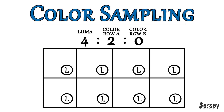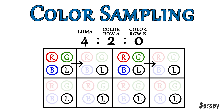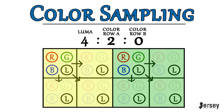In a 4:2:0 image, again, all 4 luminance channels are sampled. Then the color in row A is the same as a 4:2:2 image, where every other pixel is sampled. But then in row B, none of the pixels are sampled. So row B will now get copies of the row above it, kind of making one large pixel over the two pixels in both rows, creating much less information for the camera to capture, to shrink file sizes, but still have a pleasing effect to the eye.